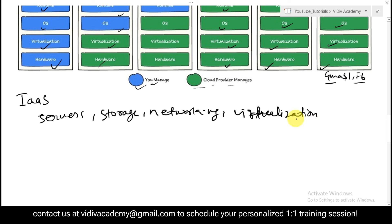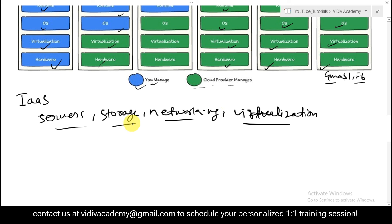Users have granular control over the infrastructure. Examples of IaaS include Amazon EC2 (Elastic Compute Cloud), Microsoft Azure Virtual Machines, and Google Compute Engine (GCE).